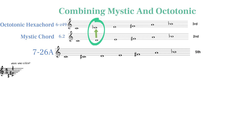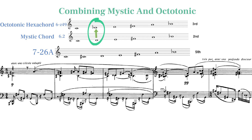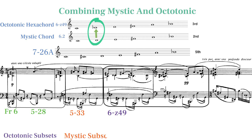Let's check out how Scriabin gracefully switches between octatonic and mystic sets in his seventh sonata using set 726. During Theme 1, Scriabin uses strictly octatonic sets, but in Theme 2 he mixes in mystic subsets. We'll highlight octatonic sets in purple, mystic sets in orange, and sets that belong to both in green.